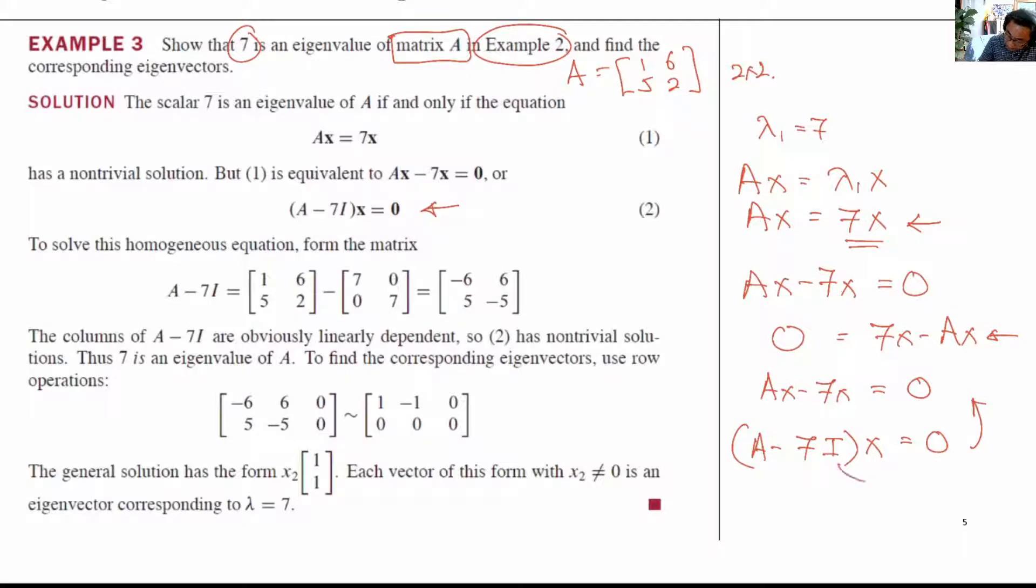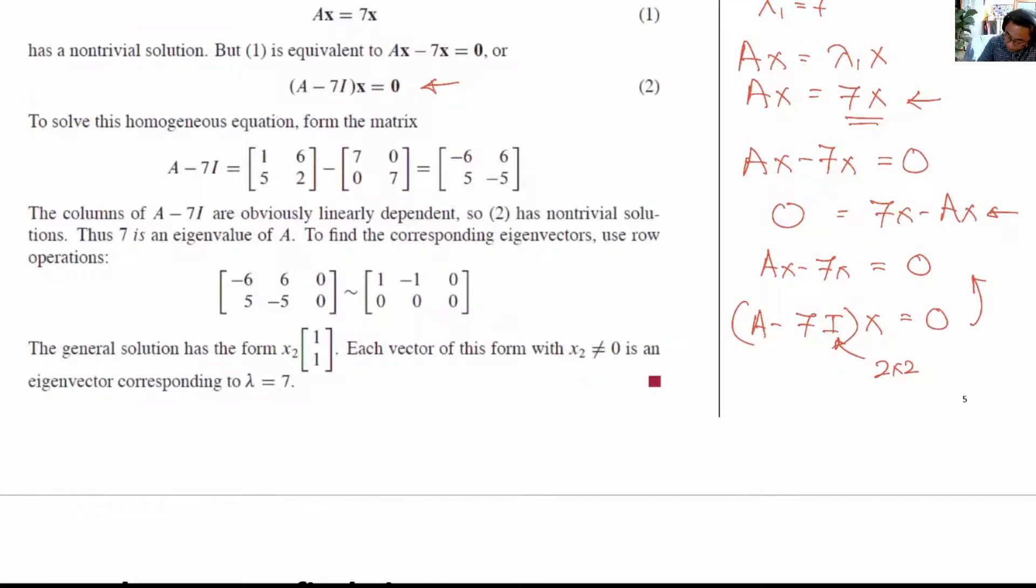The identity matrix is a 2 by 2 matrix. So I will do it for you, which is A minus 7 times [1, 0; 0, 1] multiplied by x. The vector equals 0.